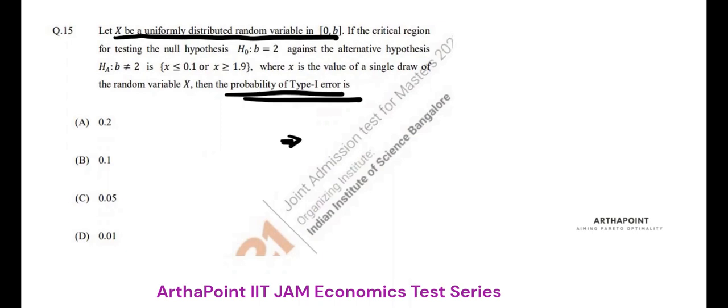The probability density function is 1 upon B minus A. So it will be 1 upon B minus 0 because it is in 0 to B. So it will be 1 by B.